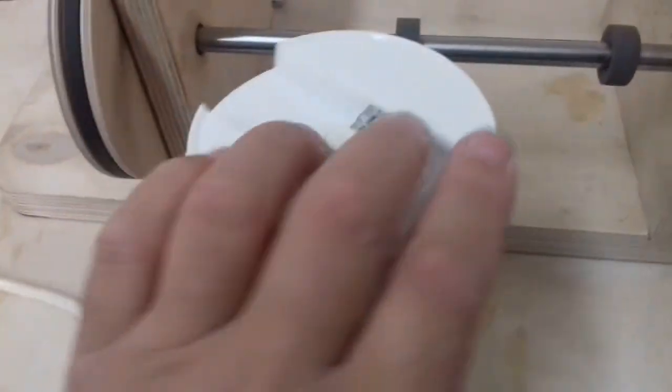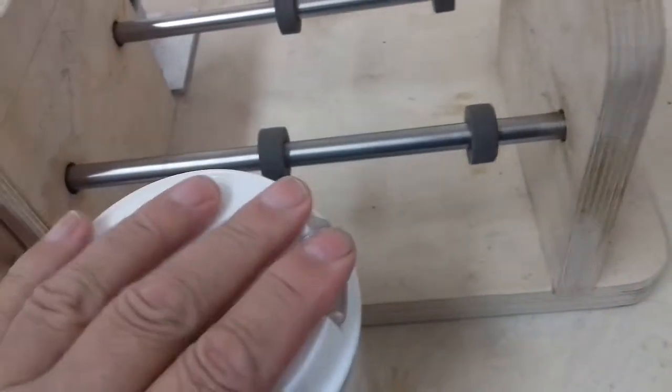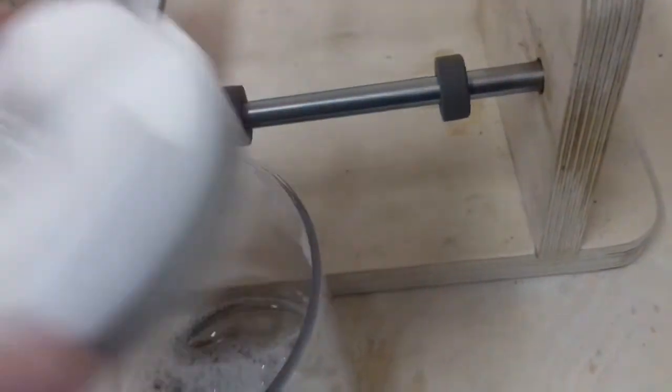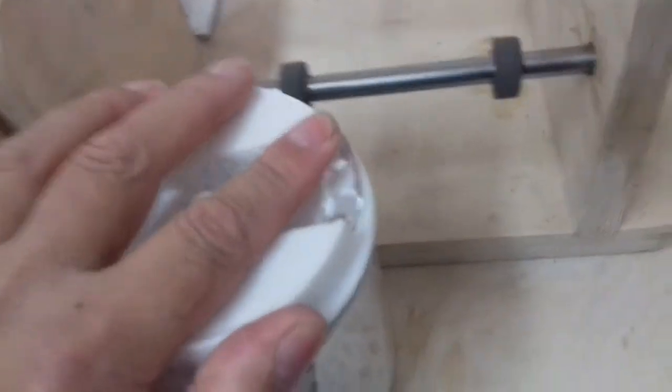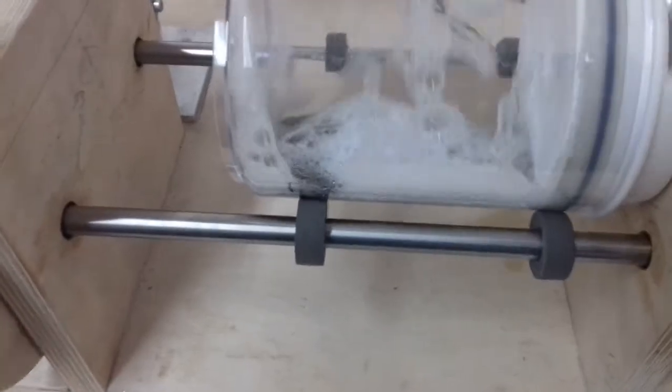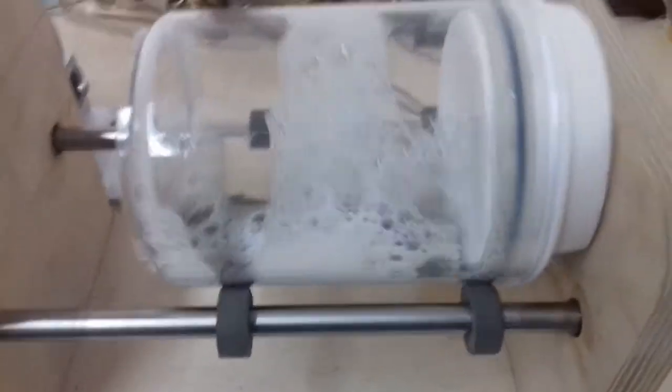Got this off Ebay. I think it was about £4. Just a self-sealing, self-locking lid. You just pop that on the top there, put your item inside and it will tumble away.